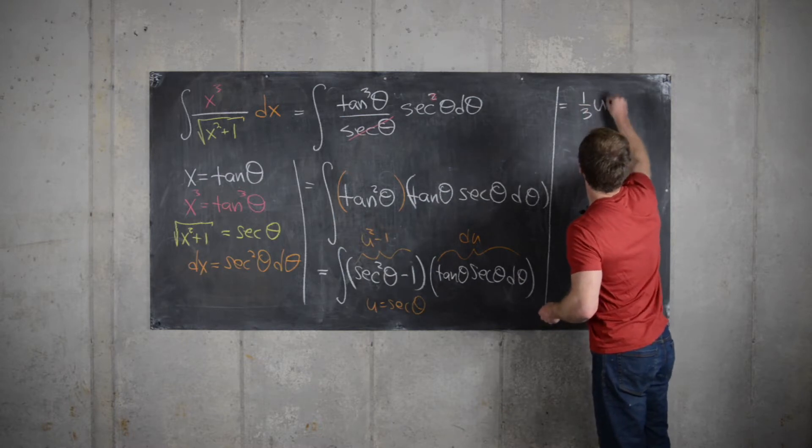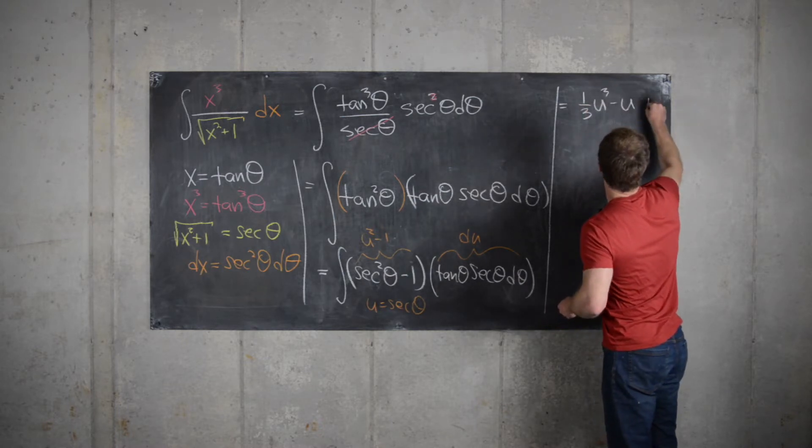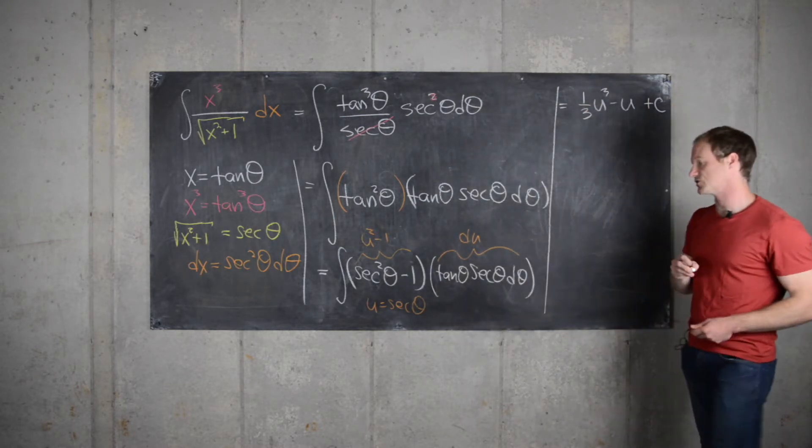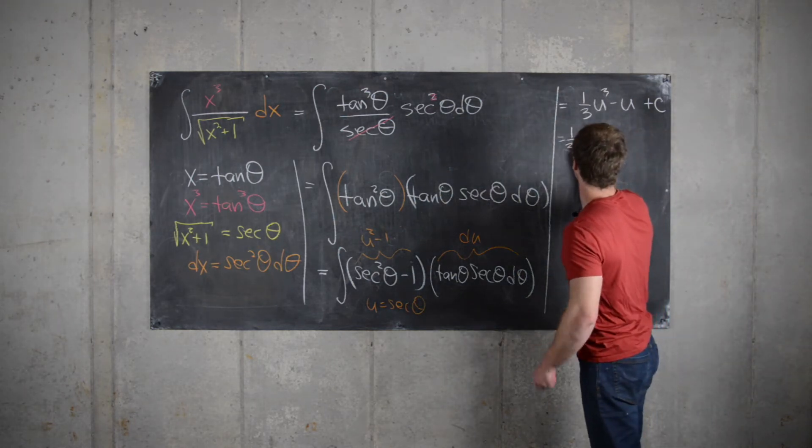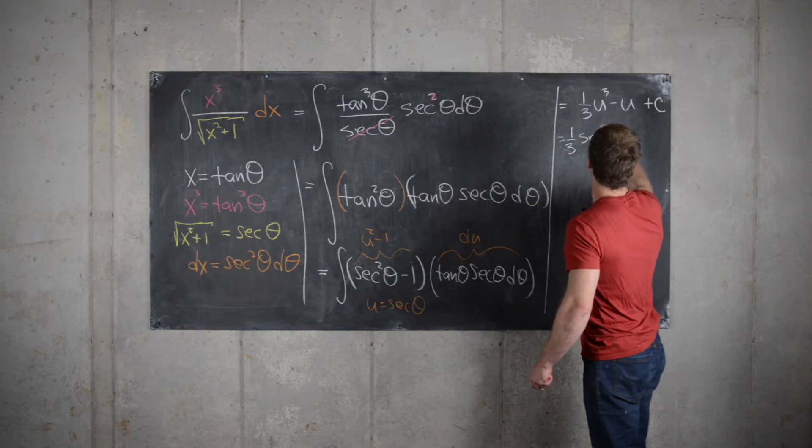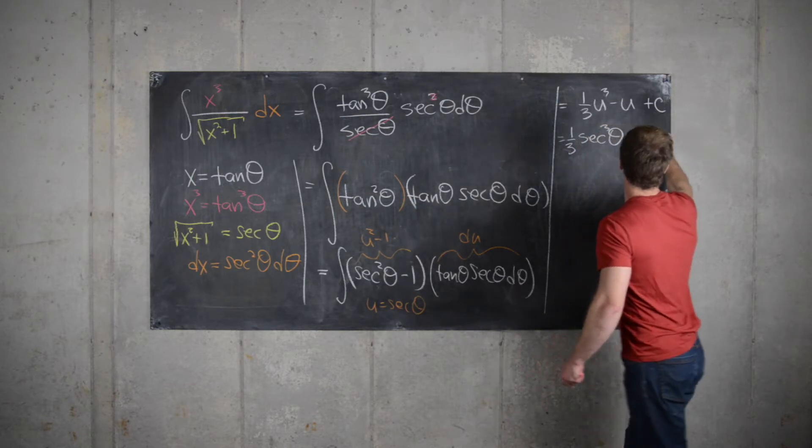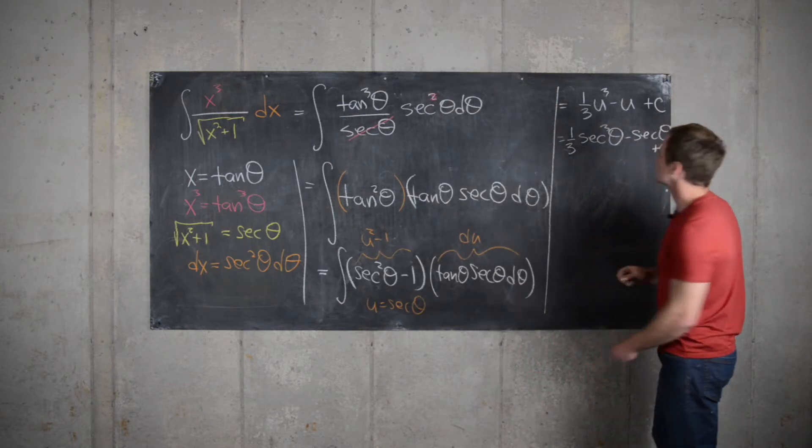So that'll give us 1 third u cubed minus u plus a constant of integration. But then u is equal to secant theta, so we get 1 third secant cubed theta minus secant theta plus our constant.